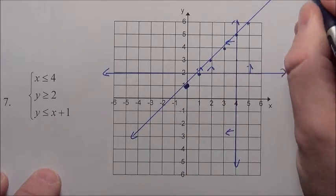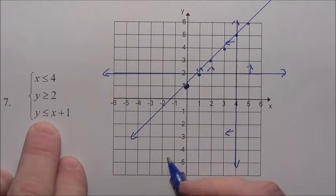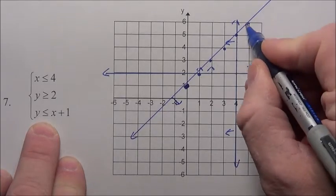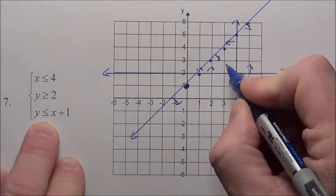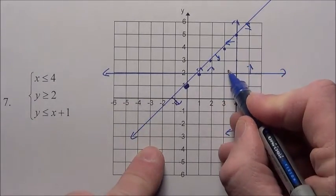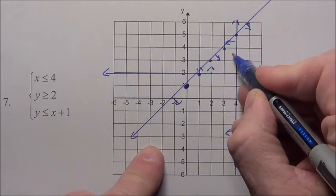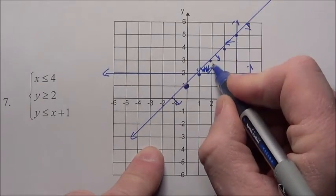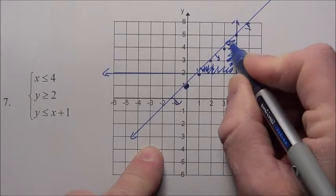And now what happens is I want to be underneath it. So I am going to be shading underneath it. Notice I want to be underneath this line, above that line, to the right of that line. What I have created is a triangle here.